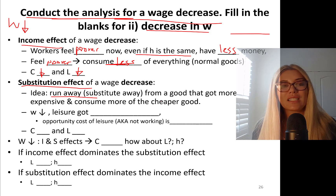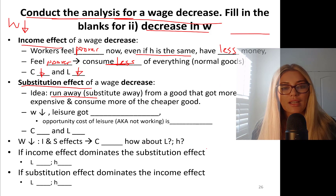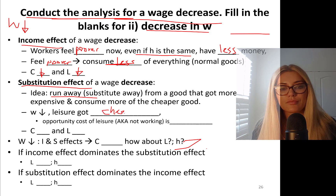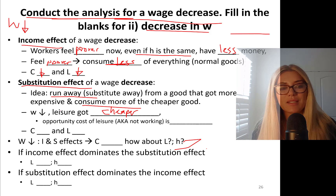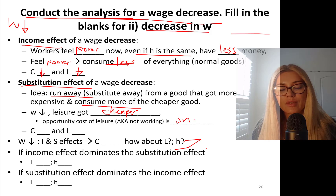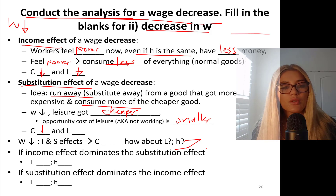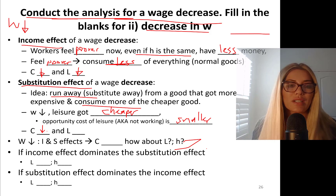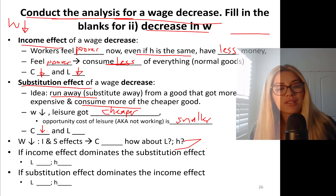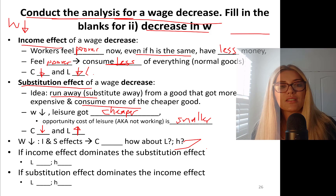Wages went down, so leisure got cheaper. You need to consume more of the cheaper good and less of the more expensive good. The opportunity cost of leisure is smaller. Consumption will go down because consumption goods are more expensive relative to leisure. Price of food didn't change, but leisure is cheaper now, so you're going to increase your leisure. Leisure goes up, hours go down — because leisure and hours add up to total time.